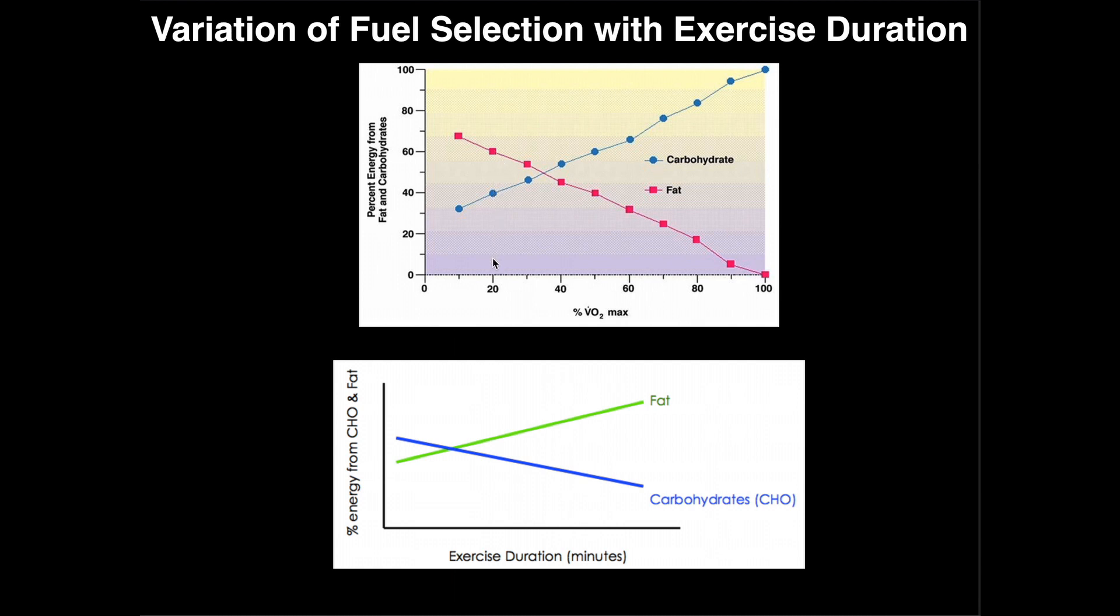Take for example 20% VO2 max. At 20% VO2 max it appears that fat, which is in this pink color here, we rely on about 60% for energy and then carbohydrates about 40%. Now we go up in intensity, let's say we do about 70% of VO2 max.